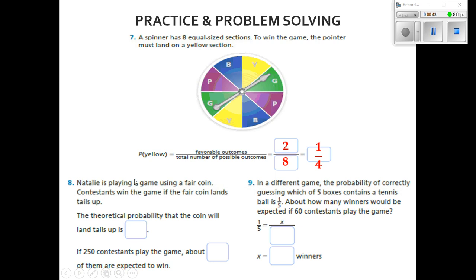Number eight says Natalie is playing a game using a fair coin. When we say fair, it means it's not one of those trick coins with heads on each side. Contestants win the game if the fair coin lands tails up.